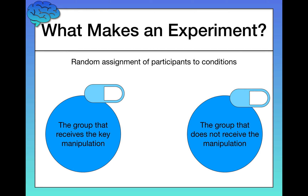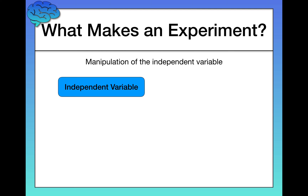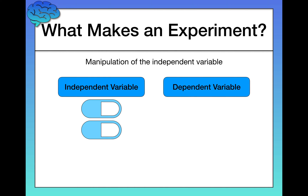The second thing that makes an experiment an experiment is the manipulation of the independent variable. The independent variable is what you're manipulating between the two groups — in this case, either giving somebody an actual medication or giving somebody a placebo. The dependent variable is what you as the researcher predict your independent variable should have an effect on. In this case, you expect that your treatment should help with depression, so your dependent variable is depressive symptoms, or more generally, depression.